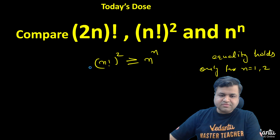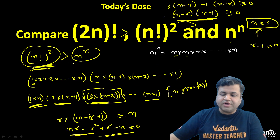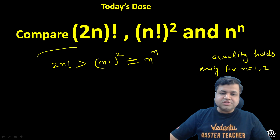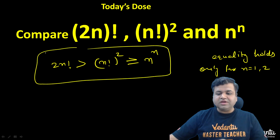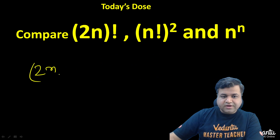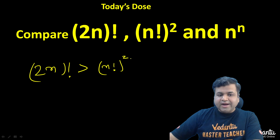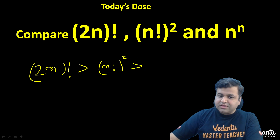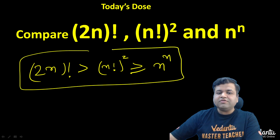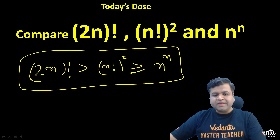So I have proved that (2n)! is greater than (n!)², and (n!)² is greater than or equal to n^n. This is our final comparison: (2n)! > (n!)² ≥ n^n. That is the comparison of these three terms.